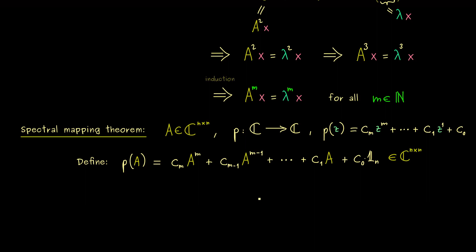Moreover, the whole thing is also well-defined, which means if you rewrite this polynomial you will get out the same matrix. Now we know what it means to put a matrix into a polynomial, and with that we can state the spectral mapping theorem. This theorem tells us what the spectrum of p(A) is — namely, it's completely determined by the spectrum of the matrix A.